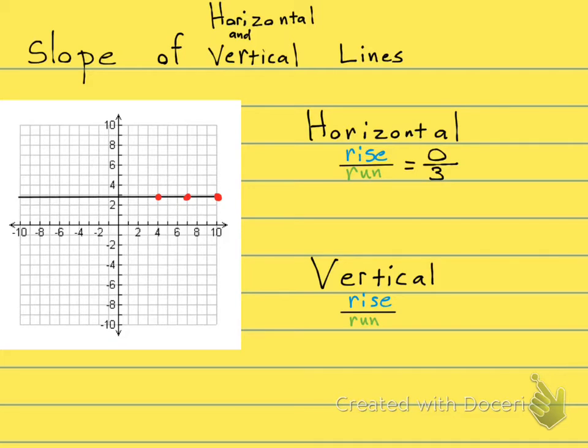Zero over any number is zero. So the slope of a horizontal line is zero. The slope of a horizontal line is zero.